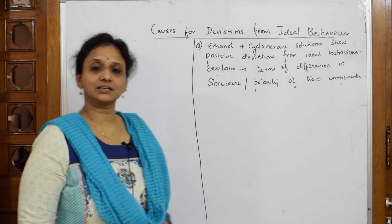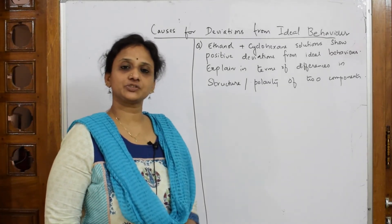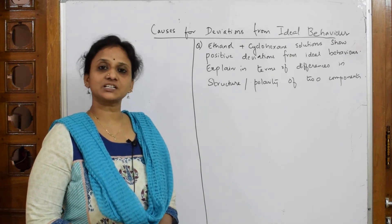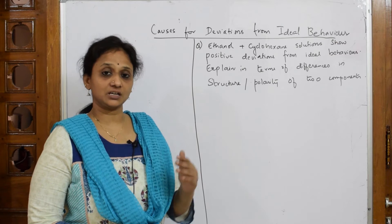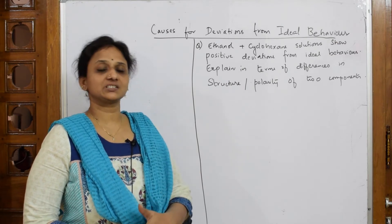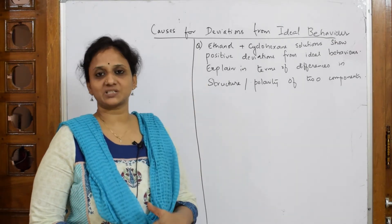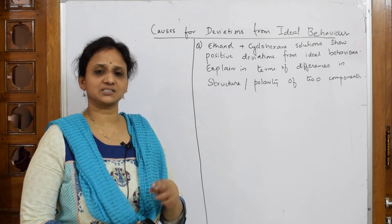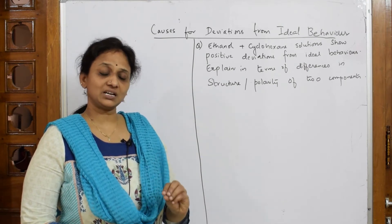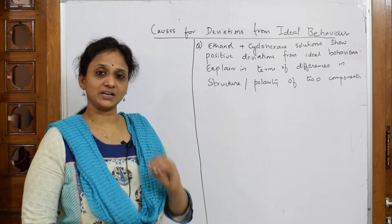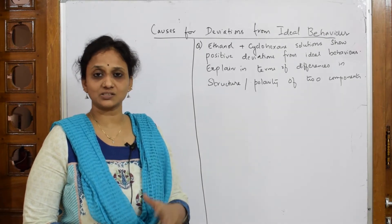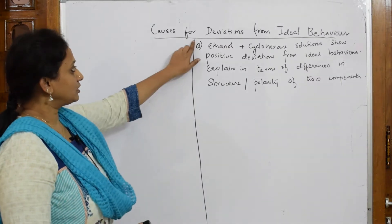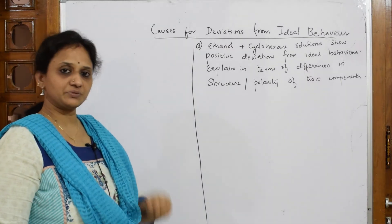We have already seen the graphical representations of ideal solutions as well as non-ideal solutions. We also studied that they show positive and negative deviation. Now what is the cause of this deviation? When we go into the micro level, what actually is the cause? Non-ideal solutions are going to show two types of deviations: positive deviation and negative deviation.